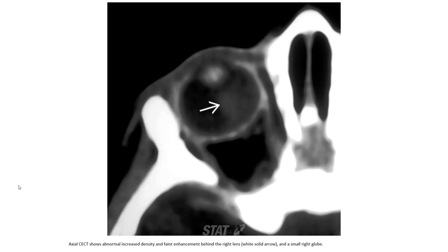This is a case of PHPV on CT imaging. Abnormal increased density and enhancement between the right lens and the small right globe is seen, which is characteristic of PHPV.